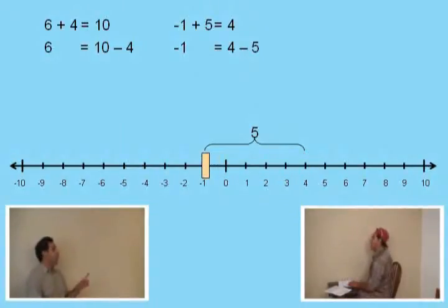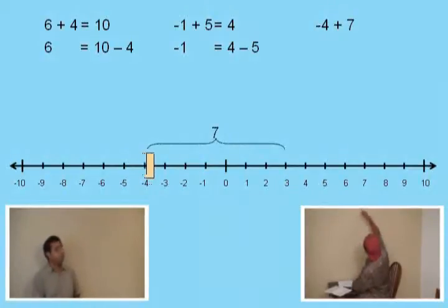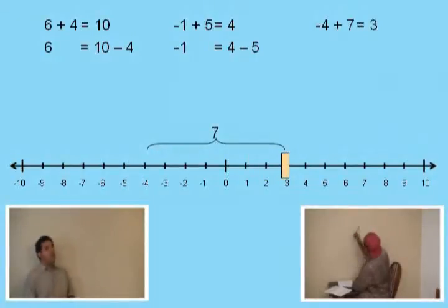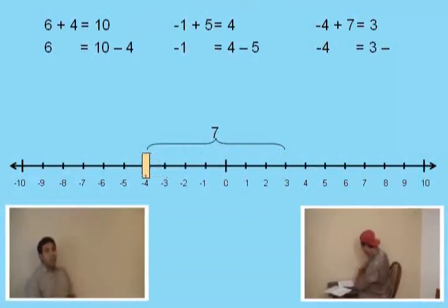Okay Charlie, one more. Bear with me. We're working up to this. What is negative 4 plus 7? 3. Very good Charlie. It is 3. Okay. Now, what number do I subtract from 3 to get negative 4? Look at the number line. 7. Very good Charlie. Okay. It is 7.